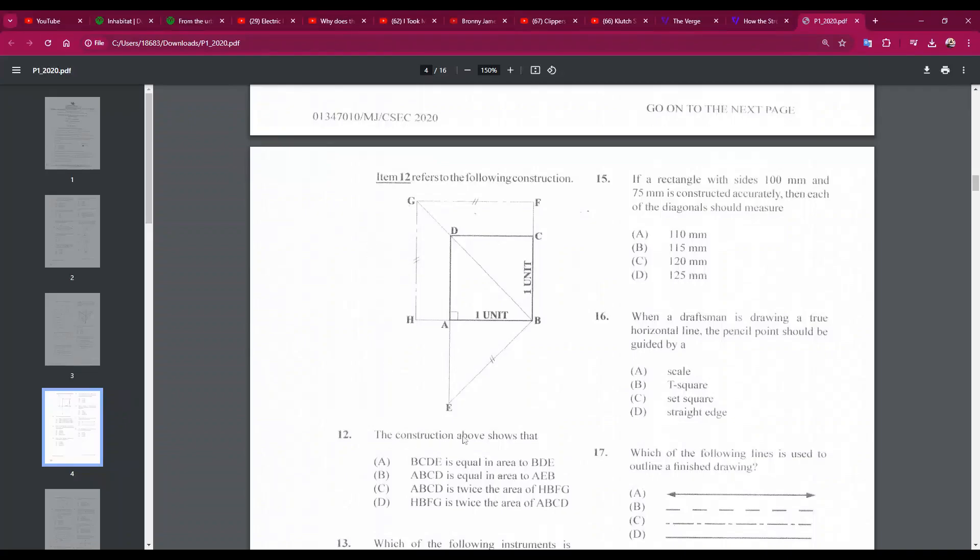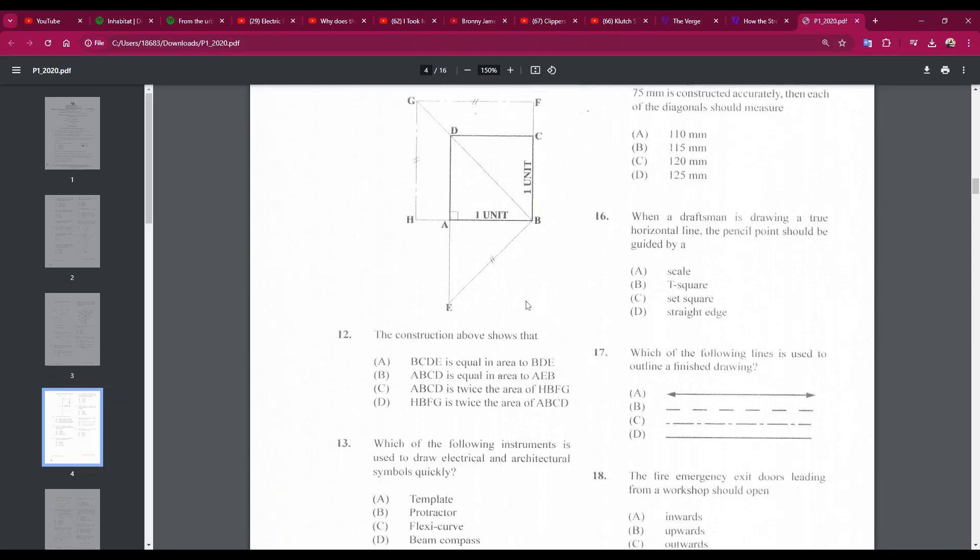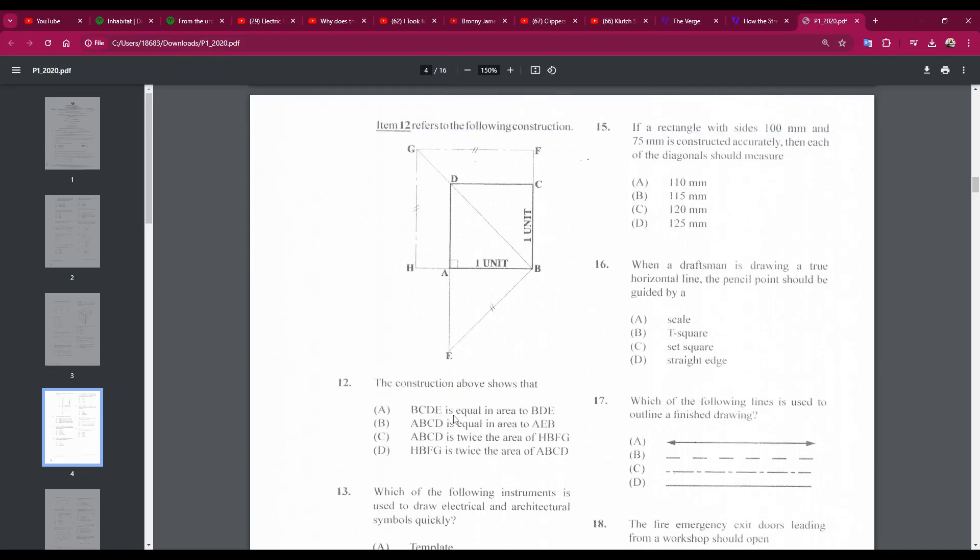Number twelve: the construction above shows that... BCDE is equal in area to BDE? That cannot be, that doesn't make sense. ABCD, which is the square, the smaller square, is equal in area to AEB? Again doesn't make sense. ABCD is twice the area of the square... So the answer has to be D: HBFG is twice the area of ABCD. Yes, that is the answer. It is just the answer that makes sense, to be honest.